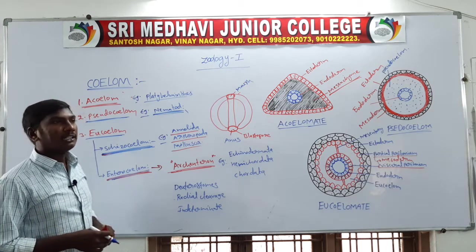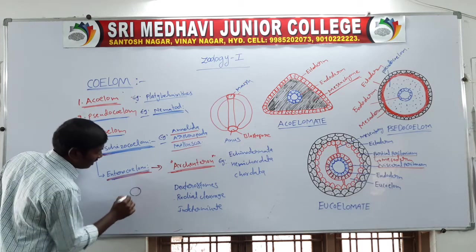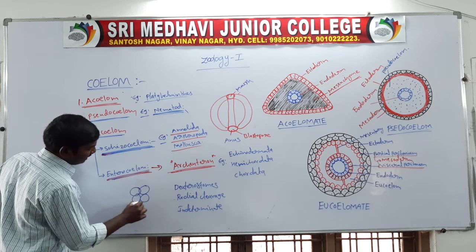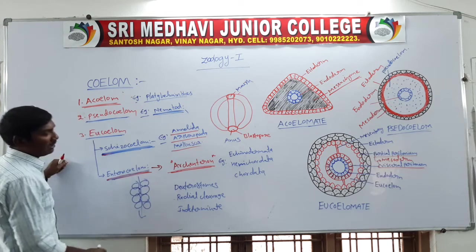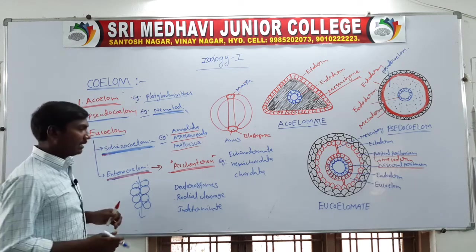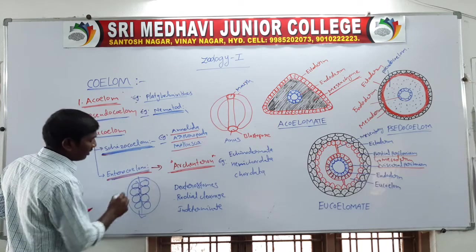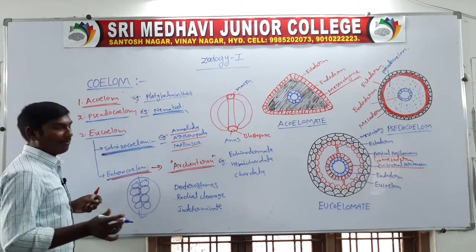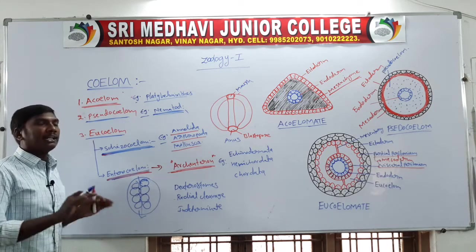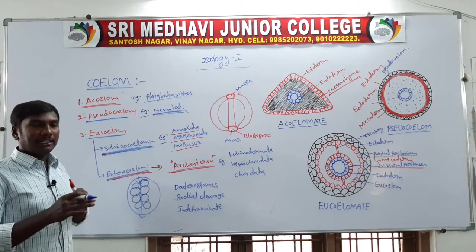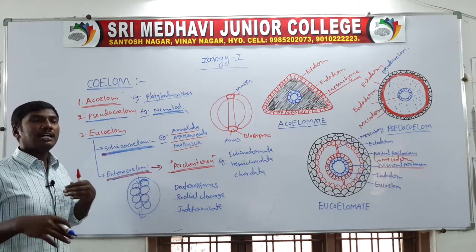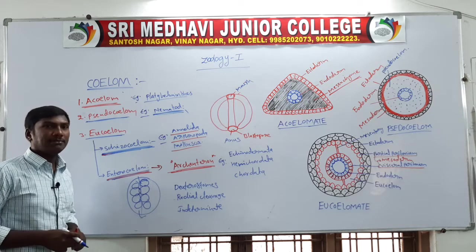Radial cleavage: one cell divides into two, into four, into eight — this is radial cleavage. Indeterminate cleavage means there is no particular region predetermined for a specific organ; any cell can form any organ. These are called indeterminate cleavage. Thus the two types of eucoelomate are schizocoelom and enterocoelom.